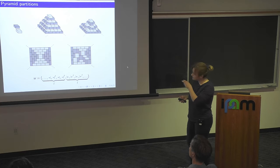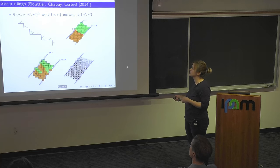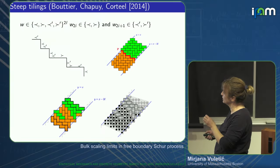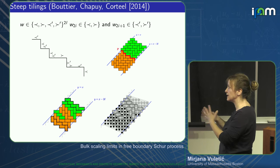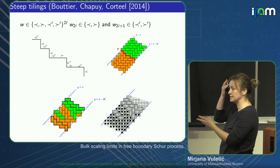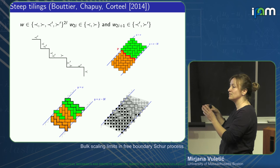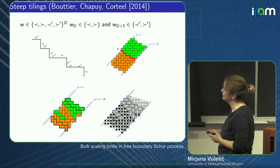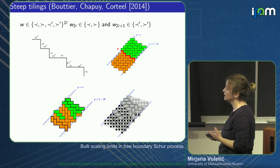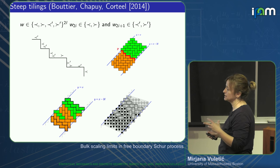The Aztec diamond and pyramid partitions can be generalized to what's known as steep tilings, due to Boutier, Chaput, and Cortel. The difference is that you still have alternating horizontal and vertical strips, but the word can be arbitrary — it's not required to strictly alternate adding and removing. For Aztec diamond the word alternates adding and removing; for pyramid partitions we add many times then remove. For steep tilings, this can be arbitrary, similar to a skew plane partition.